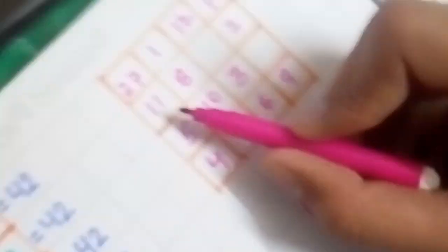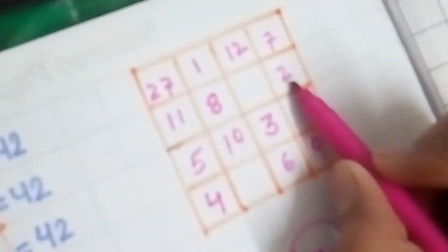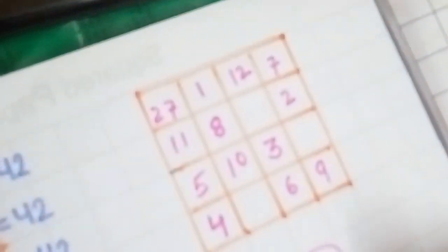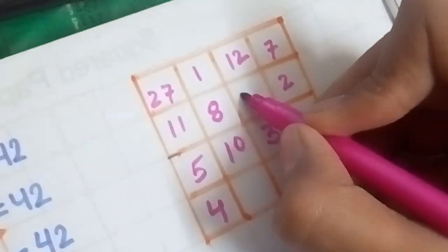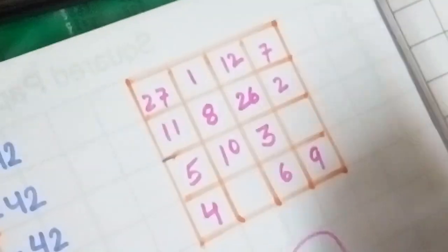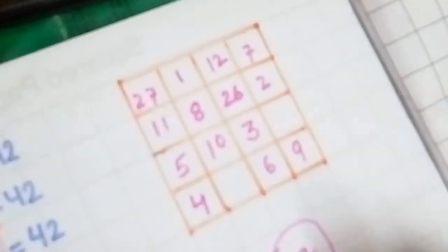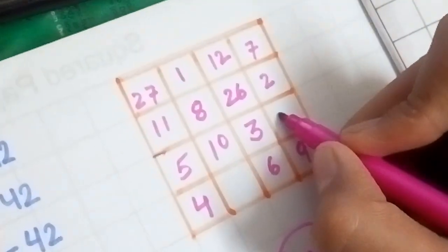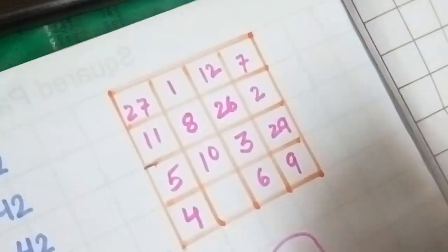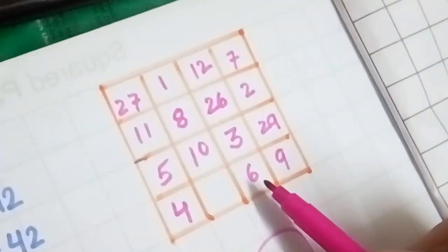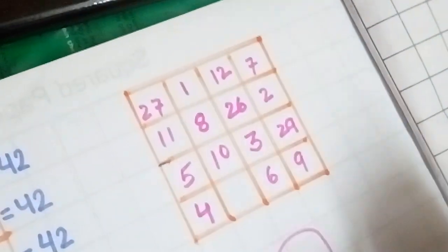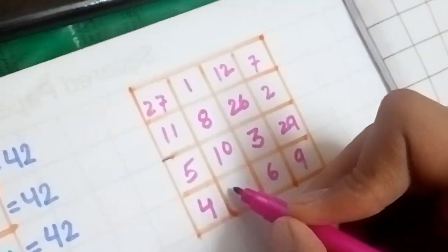Similarly, in the second row we can see that 11 plus 8 plus 2 gives you 21. You subtract 21 from 47, that gives you 26. In the same way, the third row gives you the sum 18. You subtract 18 from 47 and get 29. And the last row sum is 19. Subtracted from 47, you get 28.